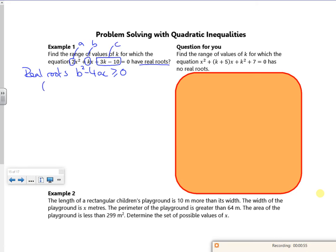Right, so I'm looking for k squared minus 4 times 2 times 3k minus 10 is greater than or equal to zero. I'm looking at it and I can already see it's going to be a quadratic. So I've got k squared, I've got minus 4 times 2 times 3k, which is going to be minus 24k. I've got minus 4 times 2 times minus 10, so that's going to give me plus 80.